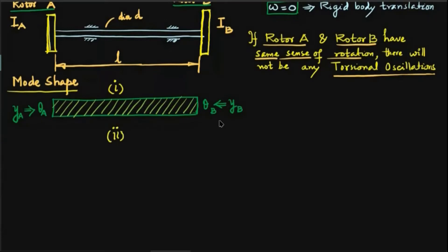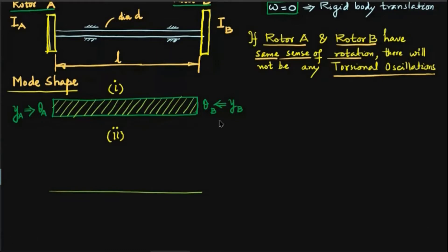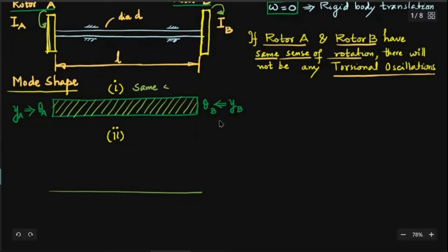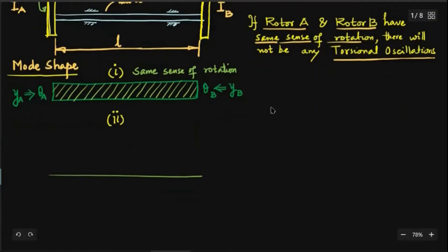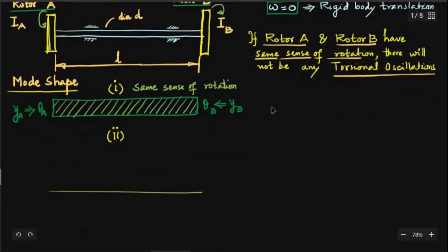The more important case is the second mode shape, where there is a node in between the two rotors. When the rotors have different senses of rotation, the mode shape has one side going upward and the other downward. We search for the node position and the amplitude of oscillations. In this diagram, rotor A is anticlockwise and rotor B is clockwise — different senses of rotation. This is the second case, and there will be a node somewhere along the shaft length L.